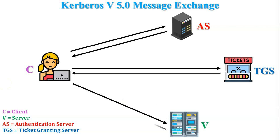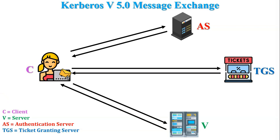Then server V sends an encrypted message to the client. The client decrypts that message and accepts the connection. Then the client sends an encrypted message to the server and requests the services. The server decrypts that message and provides the requested services to the client. So this is the message exchange scenario.